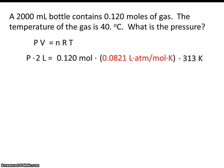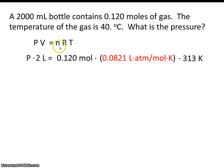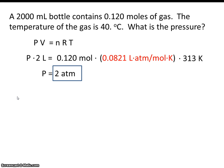So now just do the computation on your calculator. This has 3 sig figs, this has 3 sig figs, this had 3 sig figs, and this of course has 1 sig fig. So our answer should be 2 atmospheres.